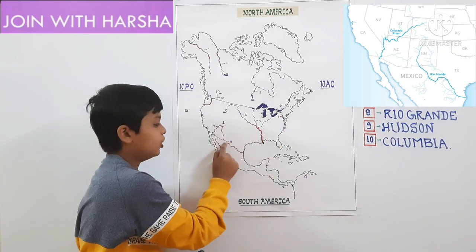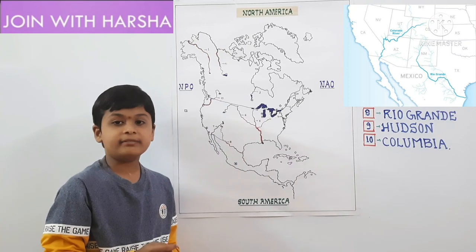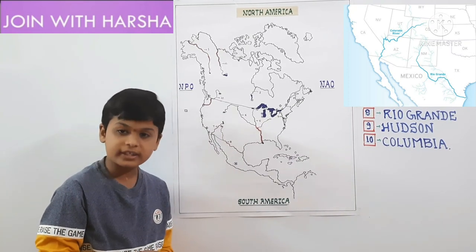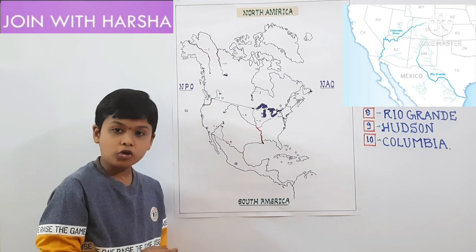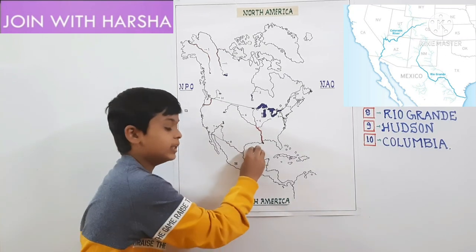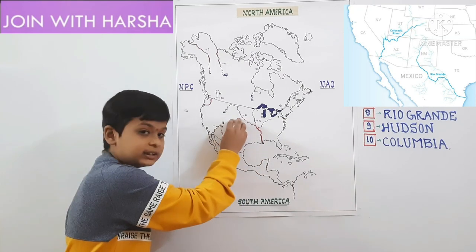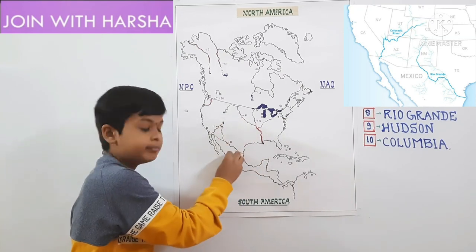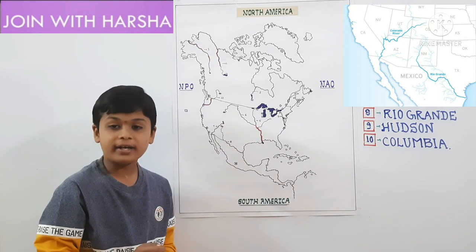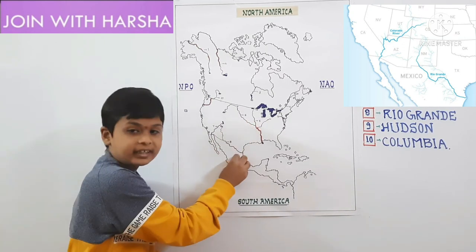Next one is Rio Grande River. Rio Grande River's source is also the Rocky Mountains. It flows towards South and drains in the Gulf of Mexico. It flows in USA and Mexico, forming the border between USA and Mexico.